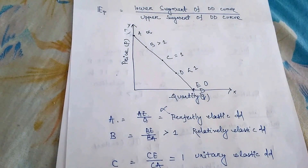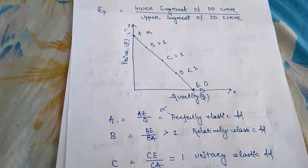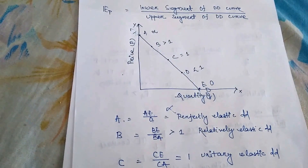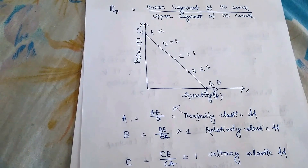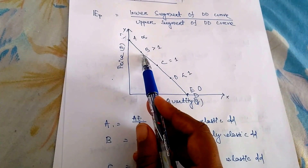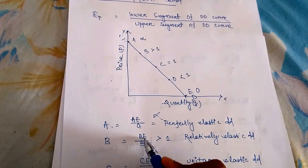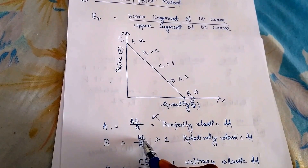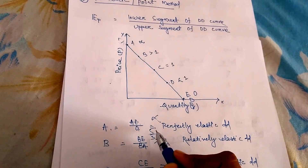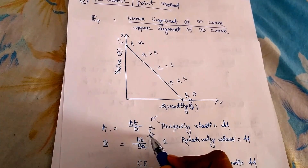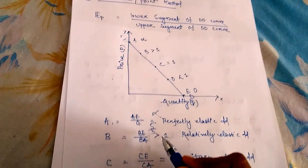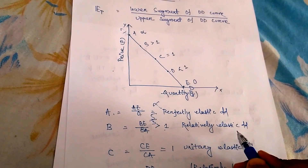This diagram is used to find the shapes of price elasticity of demand — a common exam question. At point A: AE/0 = infinity → perfectly elastic demand. At point B: lower segment BE is greater than upper segment AB (e.g., 5/3), so the value is greater than 1 → relatively elastic demand.